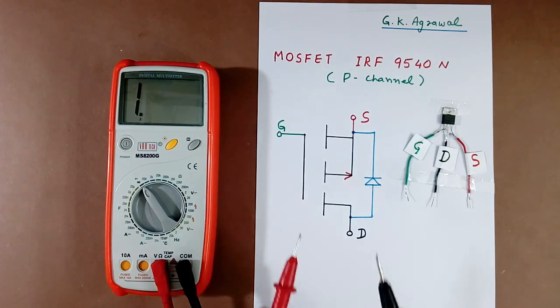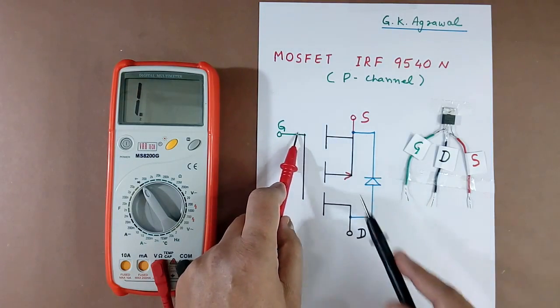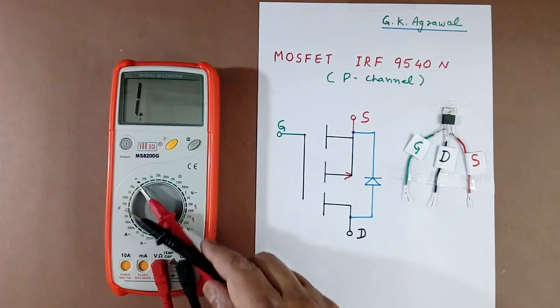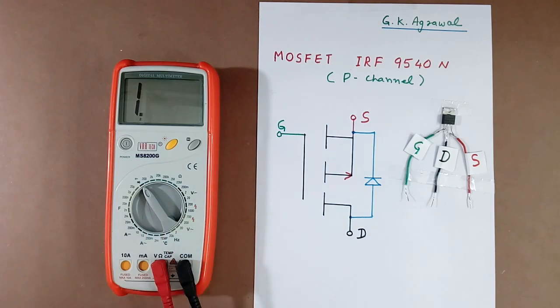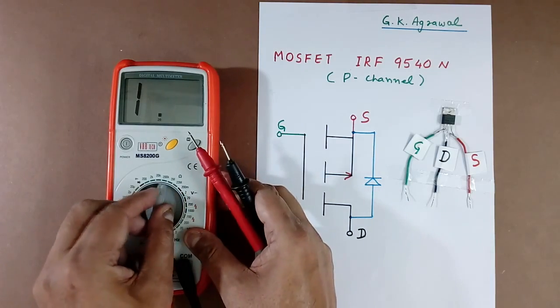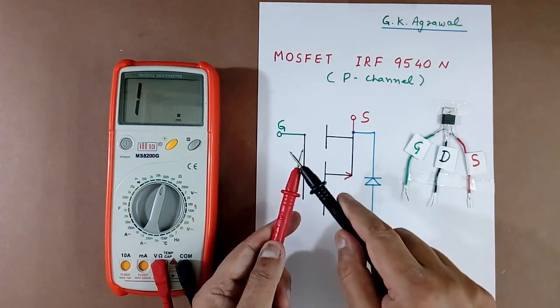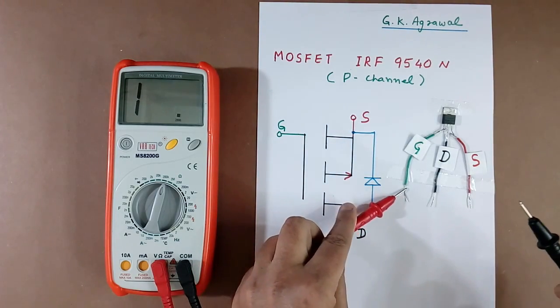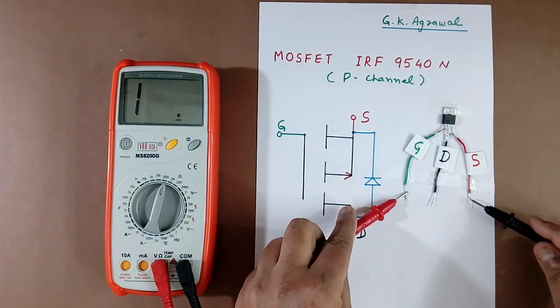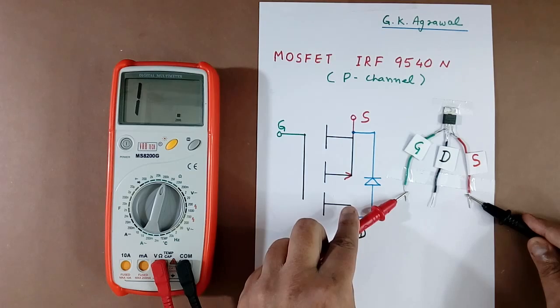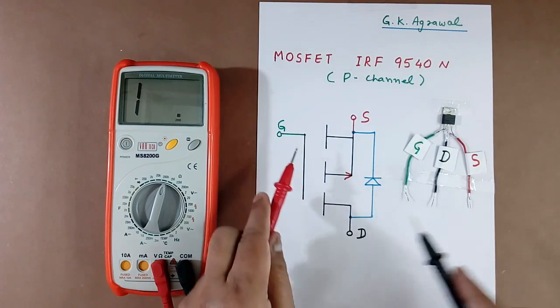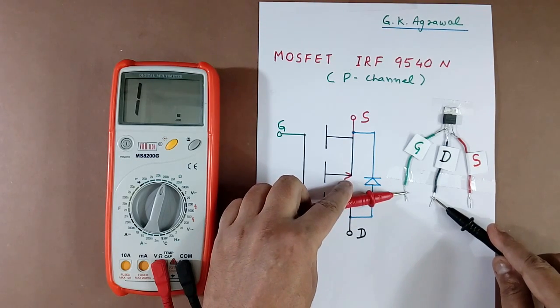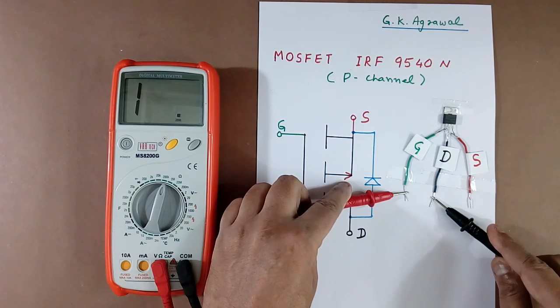Now I will check the resistance between gate and source, gate and drain. Here it is open, so it should show open. We can keep our setting at diode or at resistance. So I will keep my setting at 200 kOhm resistance. Now this terminal I will touch at gate, this terminal I will touch at source. This is gate and this is source red color. See, multimeter is showing open. Means this is OK. Now I will measure between gate and drain. Gate is this, drain is black. Now again multimeter is showing open. This means this MOSFET is OK.